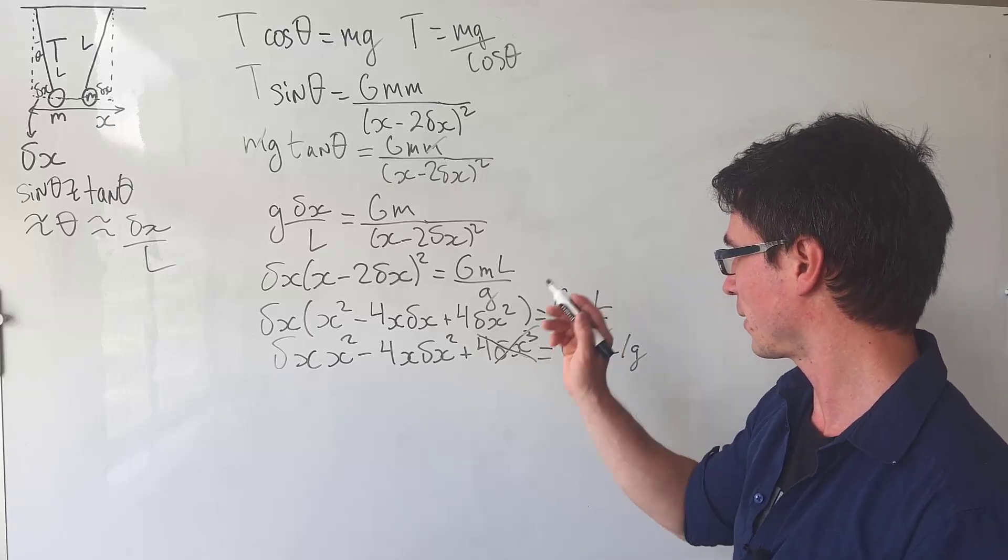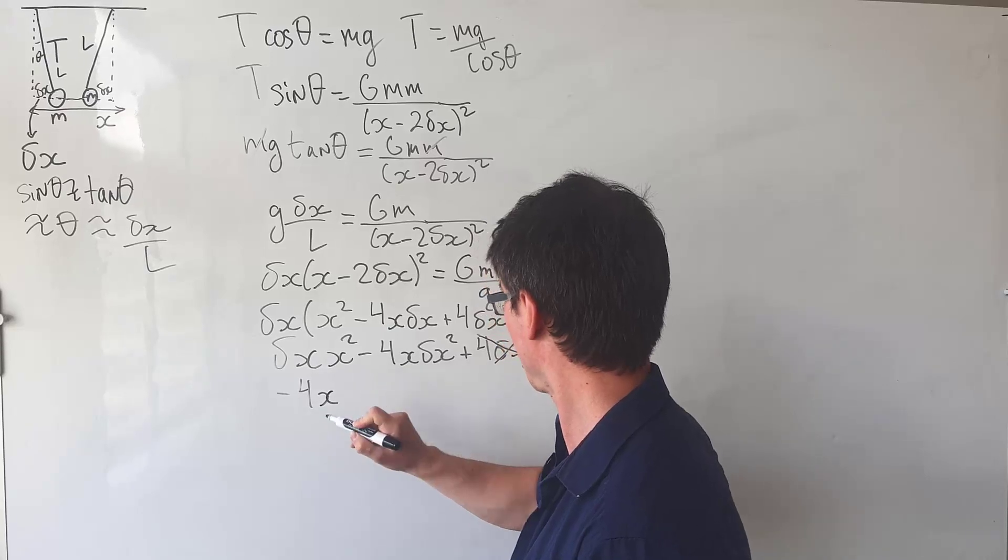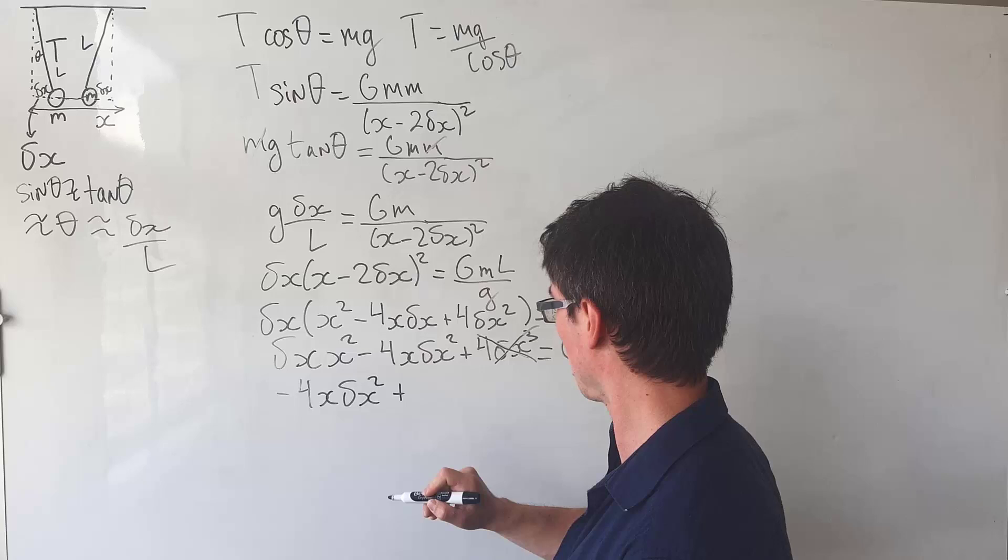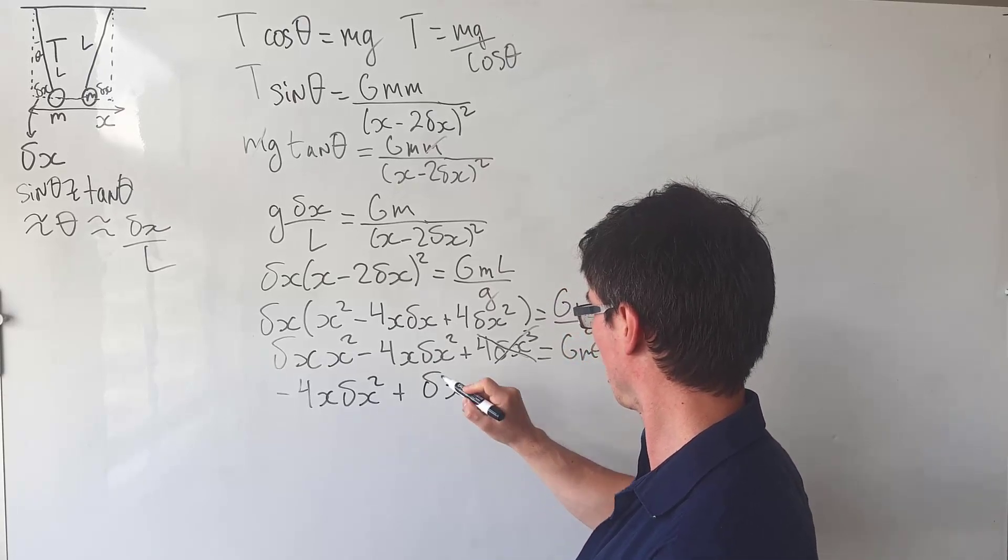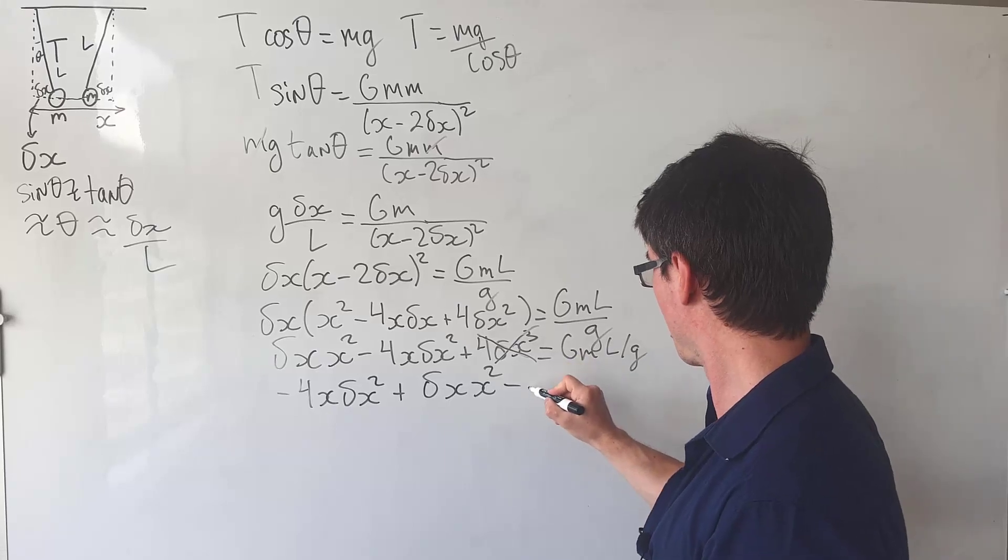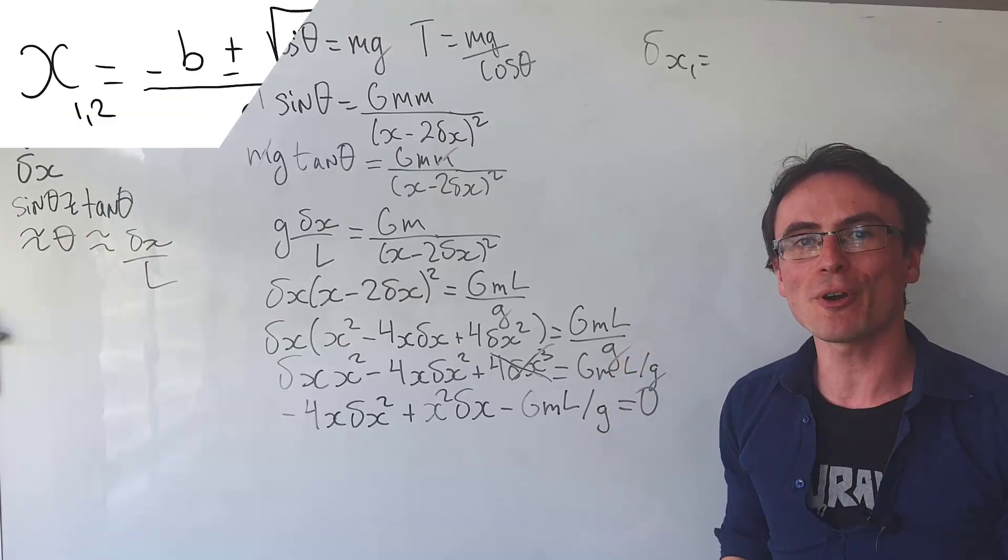Let's put it into quadratic form. So what we're going to get is minus 4x delta x squared plus delta x times x squared minus gml over g.